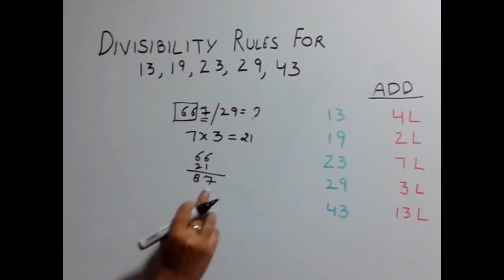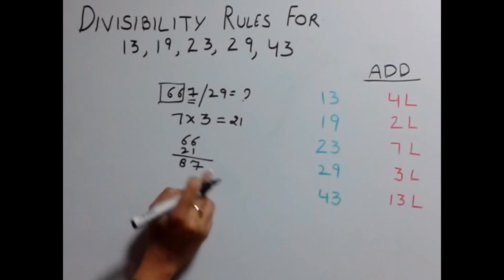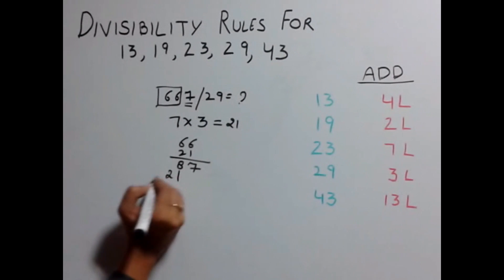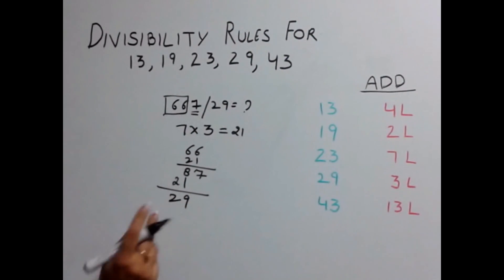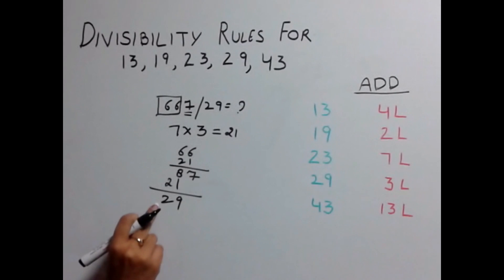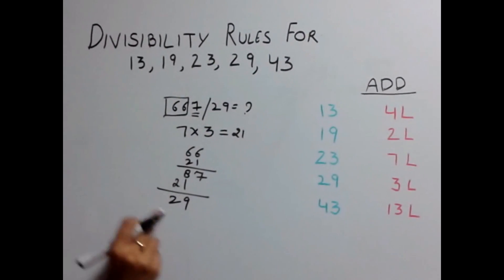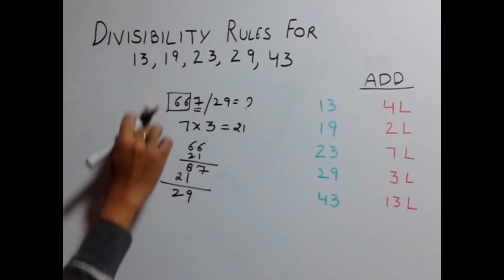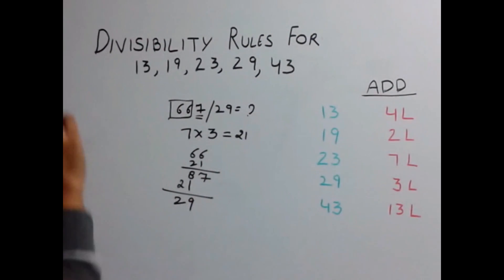Again, repeat it — multiply the last digit by 3: 7 × 3 = 21. Add this 21 to the remaining number, which is 8, giving you 29. Finally, check whether this result is divisible by 29. Since 29 is divisible by 29, the original number 667 is also divisible by 29.